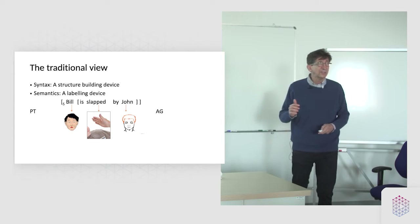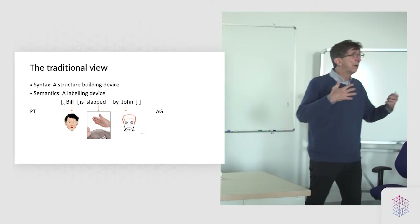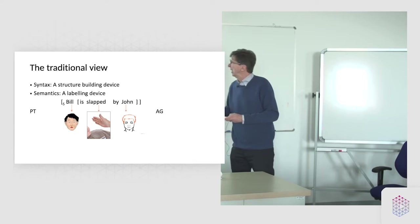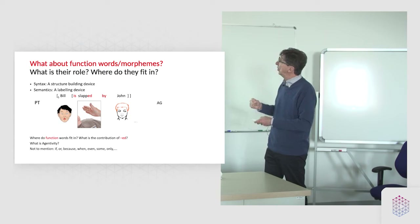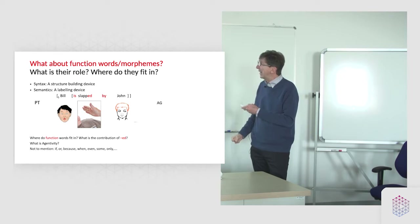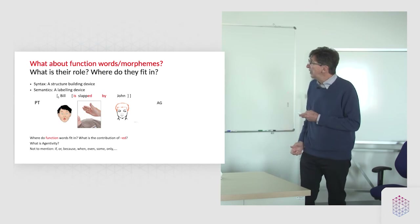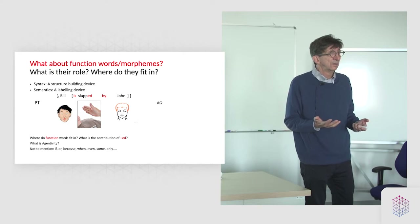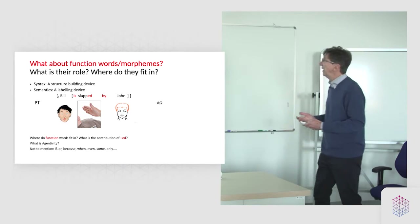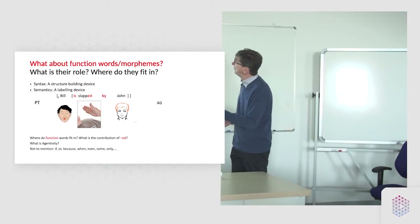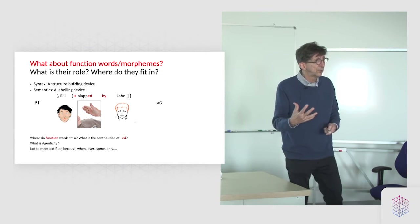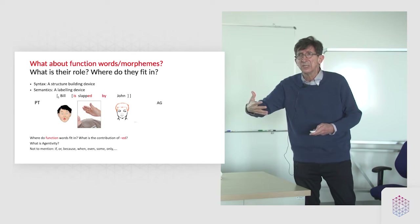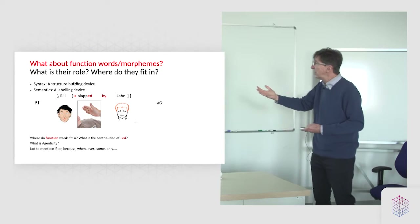There is a lot which is true about this broad picture of how language comes to encode meaning. But there is also something essential that is missing. What about these little words like the by-phrase? What does that convey? What about this tense morpheme -ED on the verb? What are they associated with? What is their role in this picture? This is a general issue of function words as opposed to content words. Content words are easy to map into things like concepts, mental images, and the like. But what do function words do?